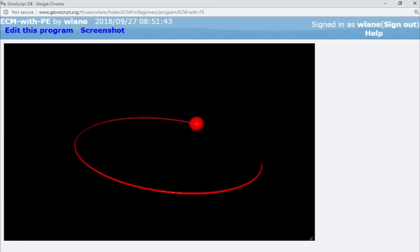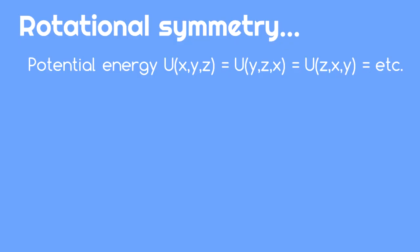There's a similar principle at work in the three-dimensional spring problem we studied using potential energy. Whenever a potential energy has the same relationship with all three position coordinates, the potential energy is said to be rotationally symmetric.